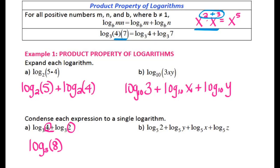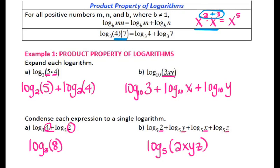For letter B condensing, I'm adding log base 5 of 2 with log base 5 of y, log base 5 of x, and log base 5 of z. To condense to one logarithm, multiply everything inside those logs: that becomes log base 5 of 2xyz. When expanding, each term inside the logarithm gets its own log — if you had two terms you get two logs, three terms you get three logs. When condensing, your goal is to get it down to a single logarithm.